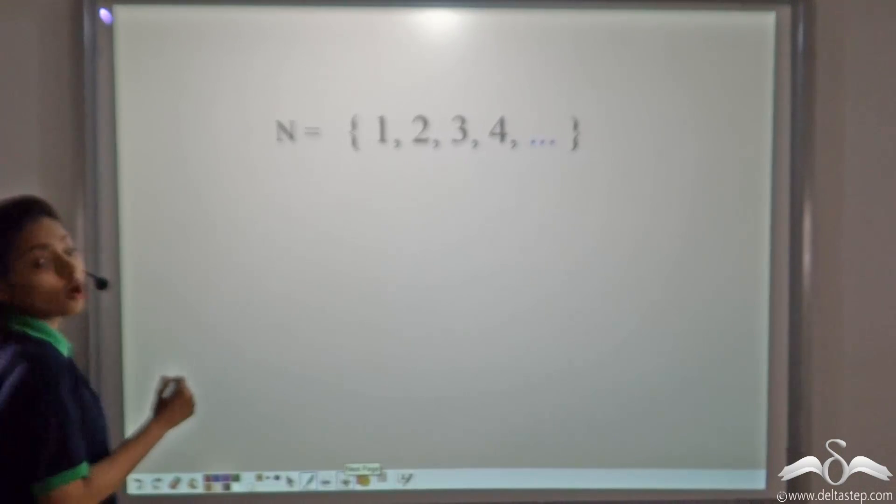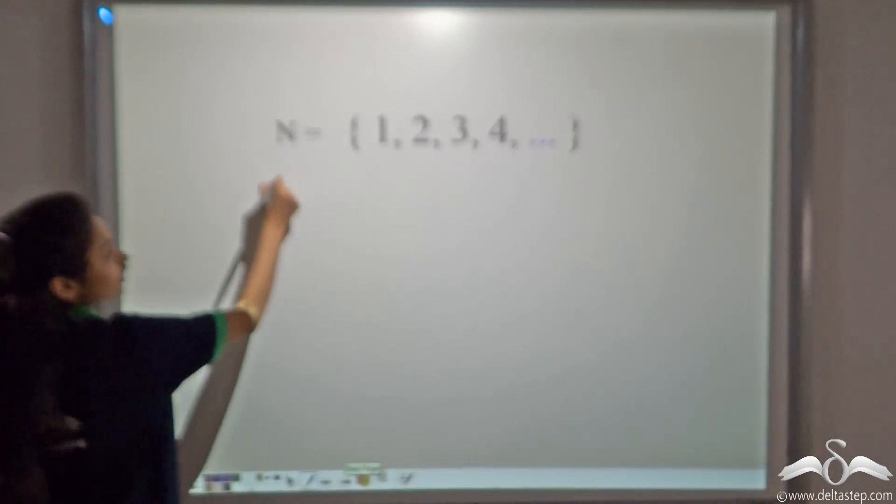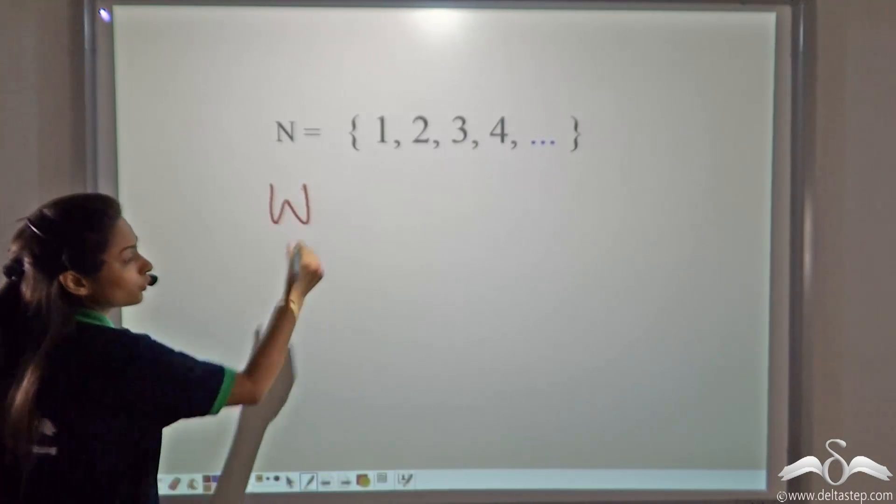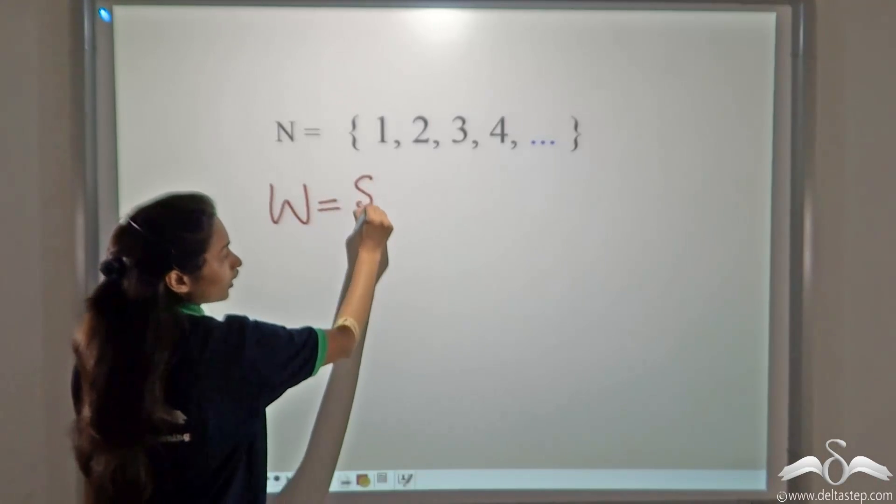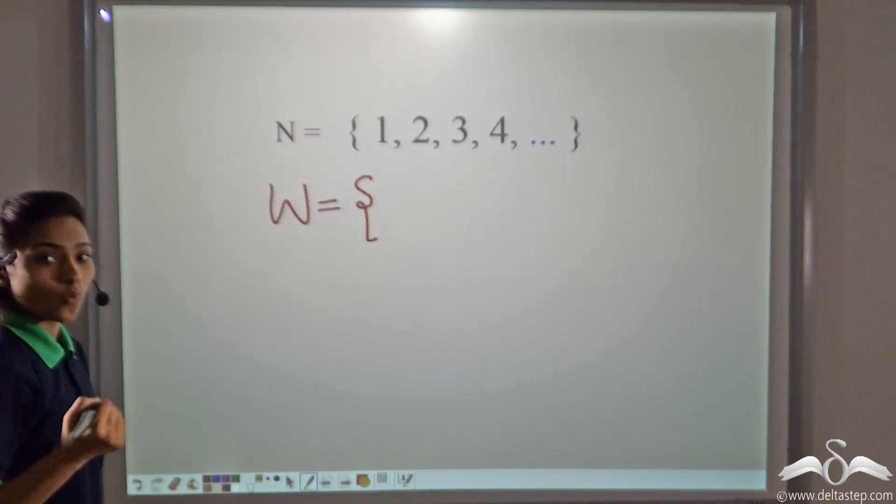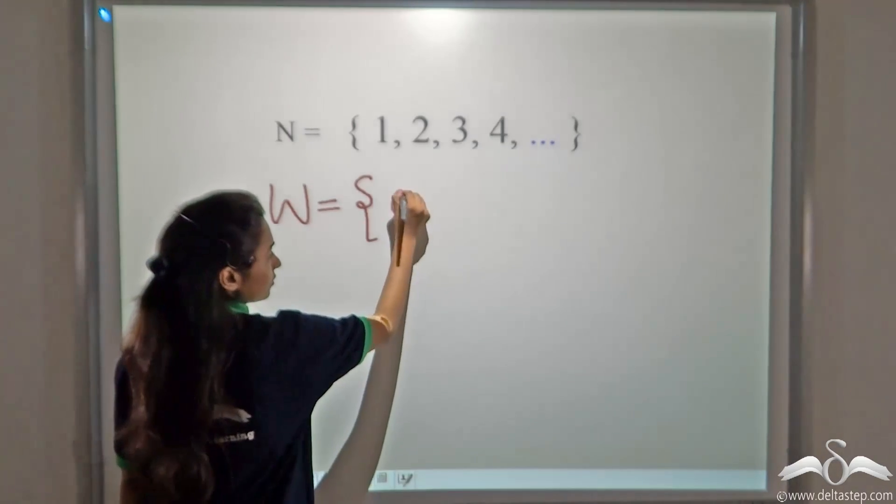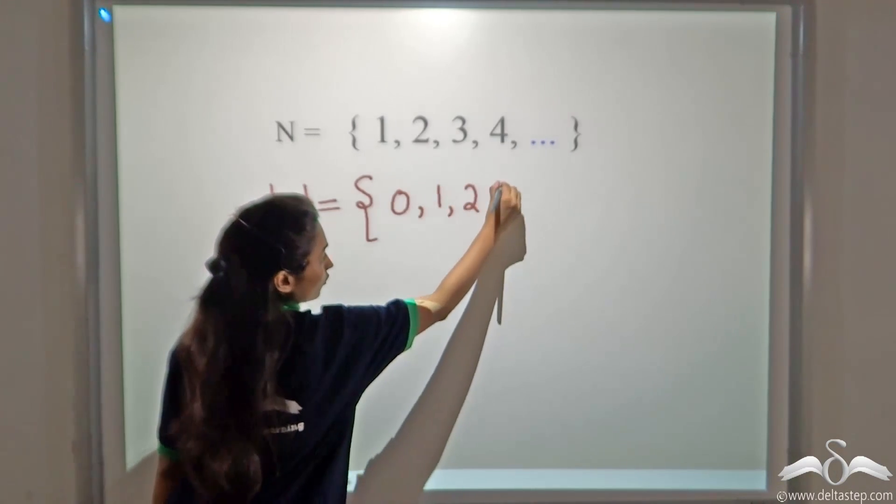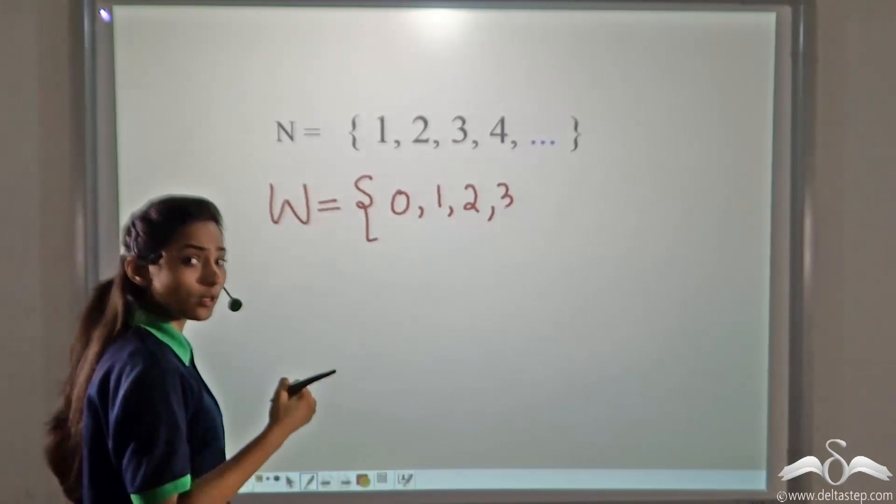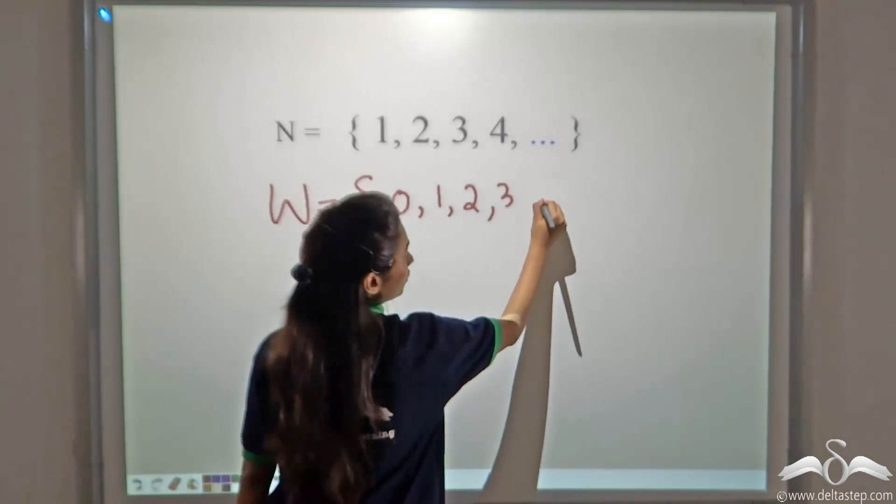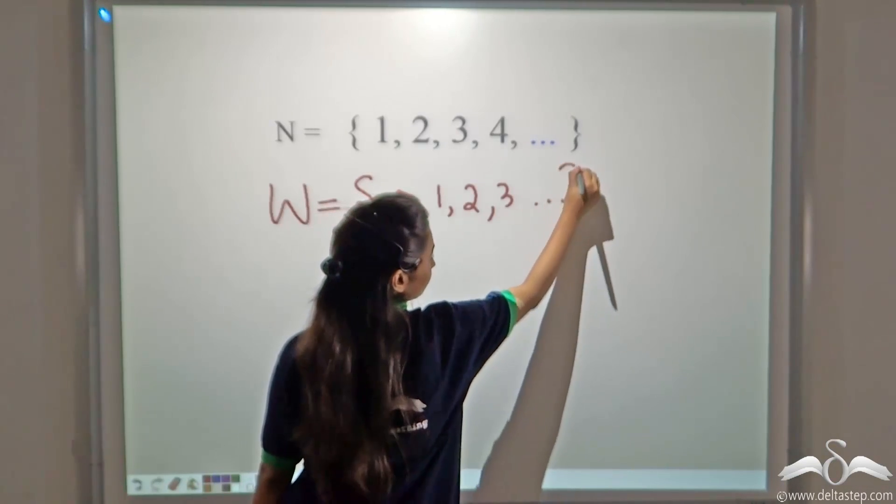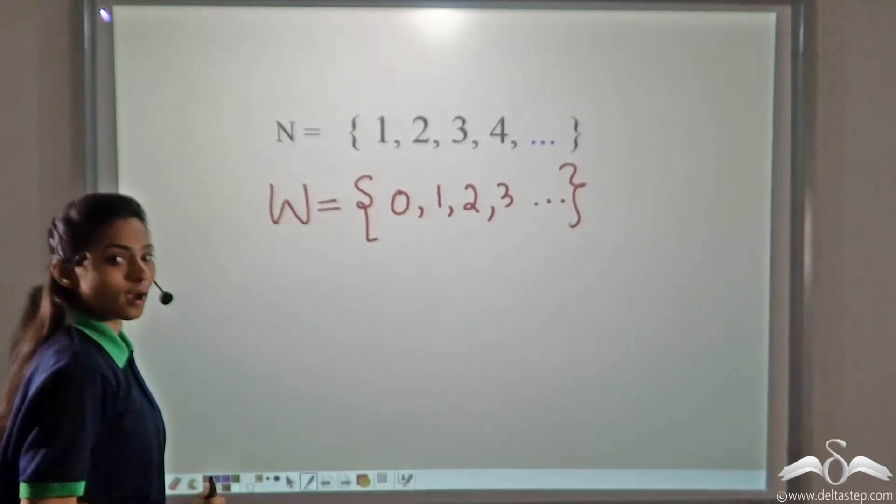Similarly, the set of all whole numbers. It is denoted by a capital letter W. What are the whole numbers? 0, 1, 2, 3 and so on. We will write it. 0, 1, 2, 3 and we know that it will not end. So, we will use ellipses. And complete our answer.